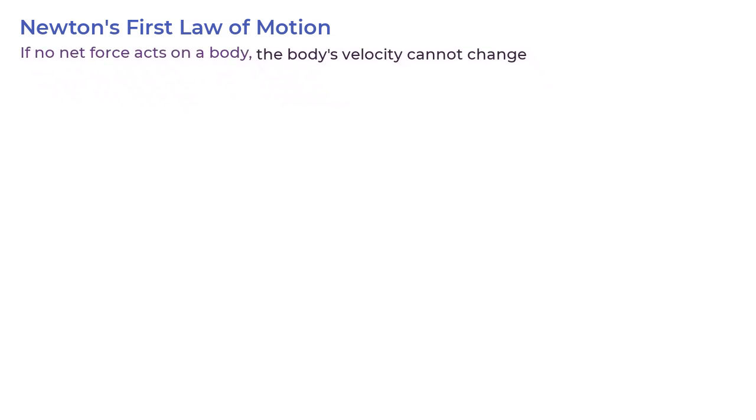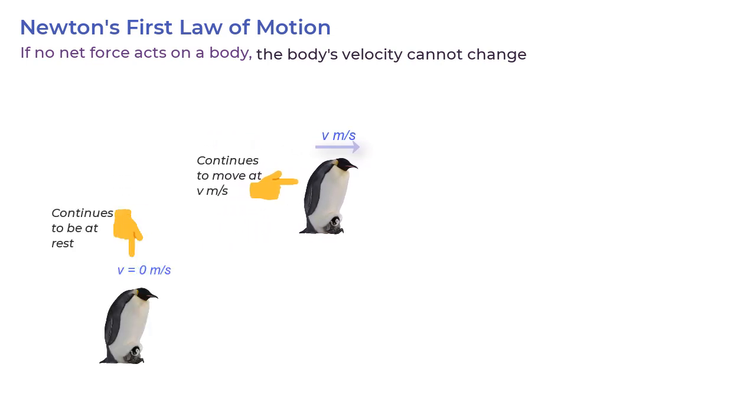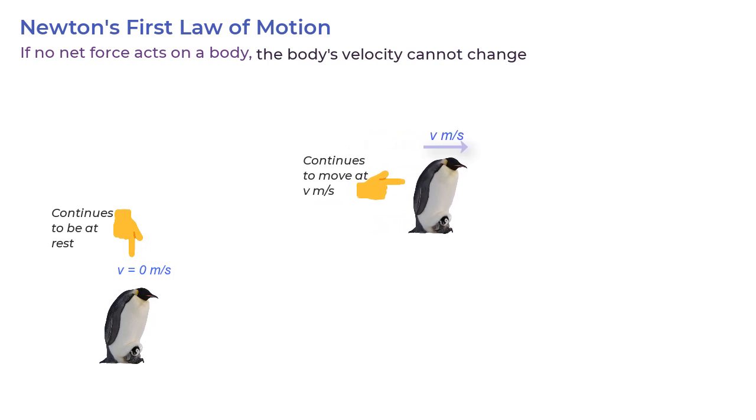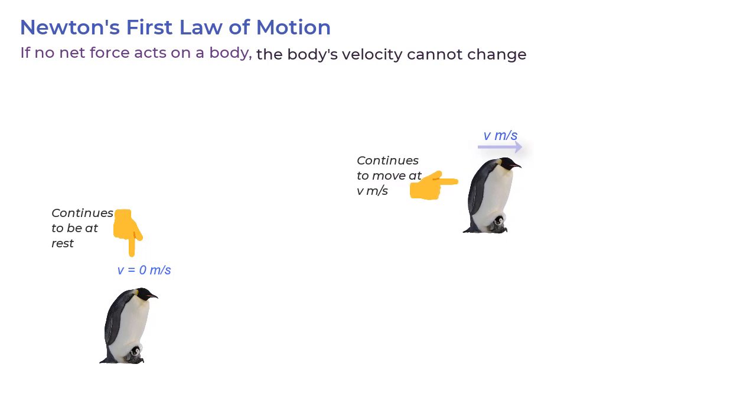In other words, if a body is moving, it continues to move with the same velocity, that is same magnitude and same direction. And this also includes a case of zero velocity. If the body has zero velocity or is at rest, it will continue to be at rest if no net force acts on the body.